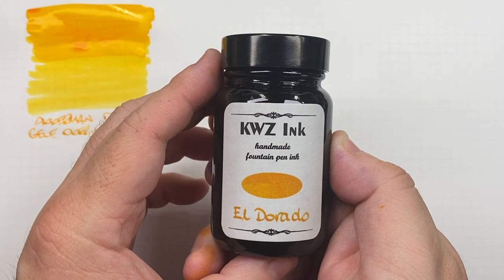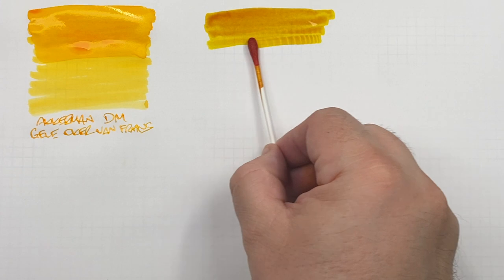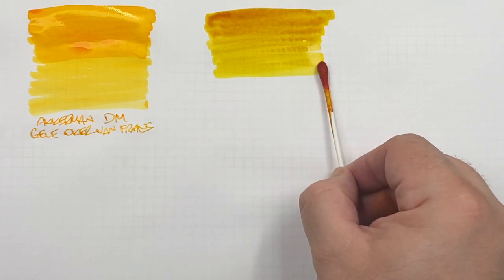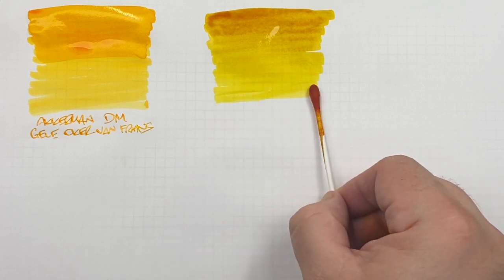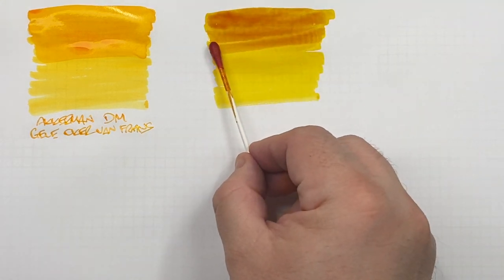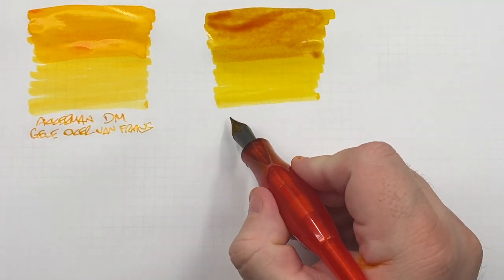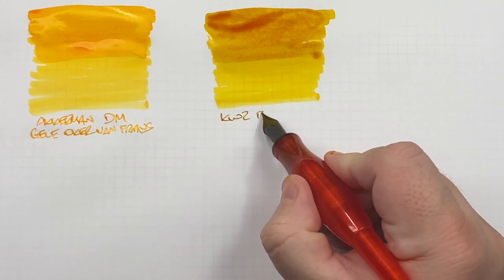The next one is a KWZ Eldorado and it's a newer or newish yellow ink to me but I had a lot of pen pals, quite a few pen pals that kept asking me do I have the Eldorado ink from KWZ and I kept saying no. Eventually I decided I would go and buy it. So here's an ink swatch so you'll be able to see the difference. It certainly is a more off yellow, more darker yellow than maybe Ackerman Dutch Masters Jelly Ochre Van Fran.